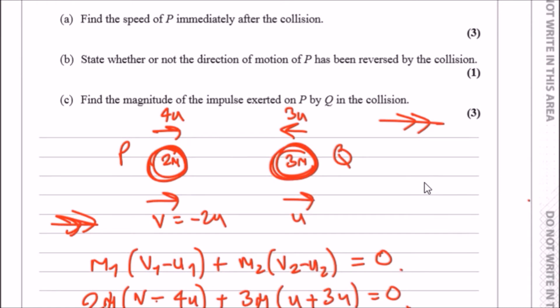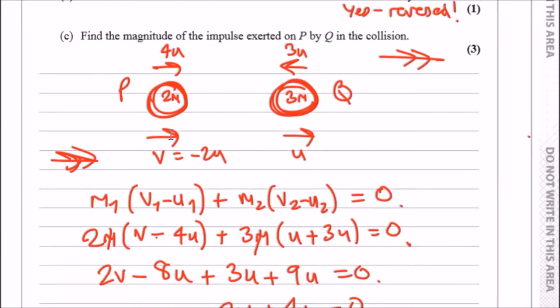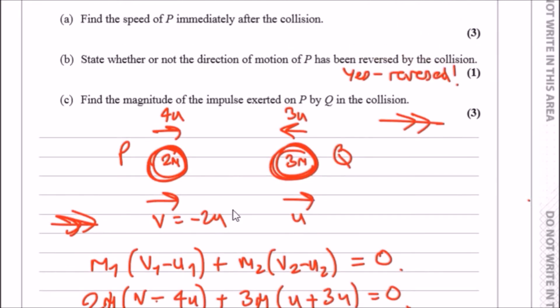Because it's negative, the speed is negative here. We can say that the direction of motion has been reversed. So for part (b), state whether or not the direction of motion is reversed: yes, it's been reversed. If it's positive, it goes in the same direction; if it's negative, it flips.